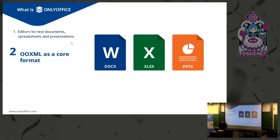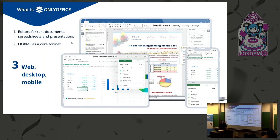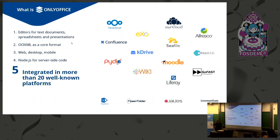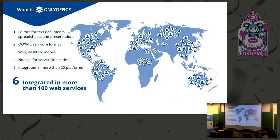Office Open XML has been chosen as a core format to ensure compatibility with almost 90% of all existing documents in the world, and to avoid any issues with file conversion. ONLYOFFICE can be deployed on any platform — we have a single engine for web, desktop, and mobile applications, which guarantees seamless switching between offline and online. We selected JavaScript as one of the most universal languages, using Node.js on the server side. ONLYOFFICE is already integrated in more than 20 well-known platforms and more than 100 web services worldwide.